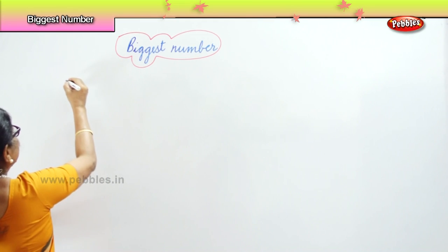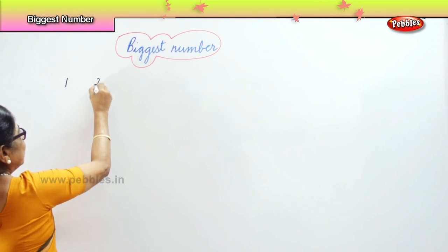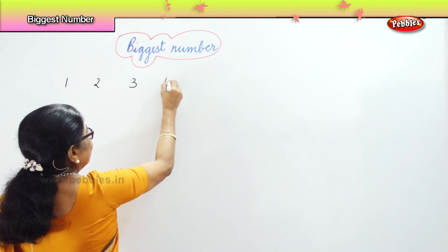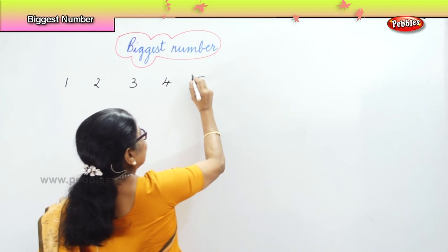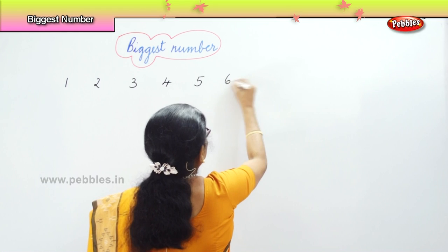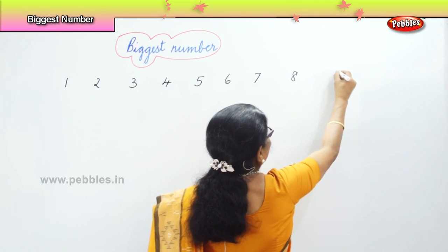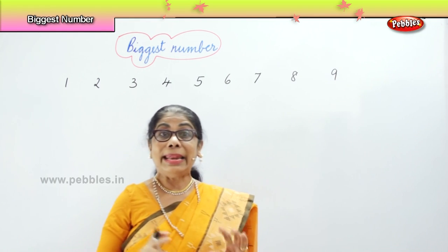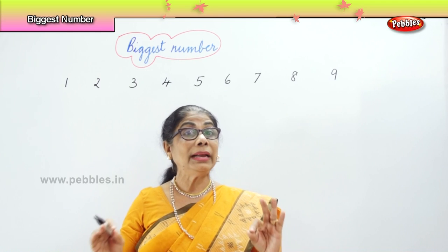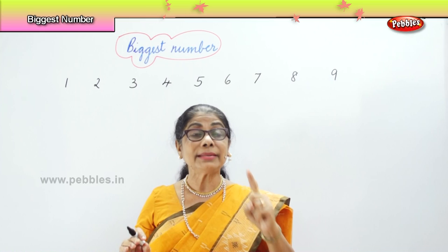First let's look at all the single digit numbers. When you say numbers, you say one, two, three, four, five, six, seven, eight, and nine. Nine numbers we have. These are called single digit numbers.